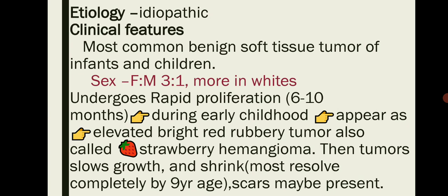The pathogenesis involves rapid proliferation for the first six to ten months. It appears within the first or second month of life, then undergoes rapid proliferation during early childhood. You will see an elevated, bright red colored lesion that is rubbery in consistency — if you palpate it, you'll notice that rubbery feel and bright red color.